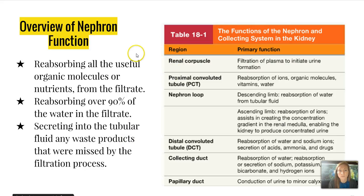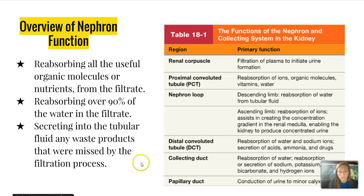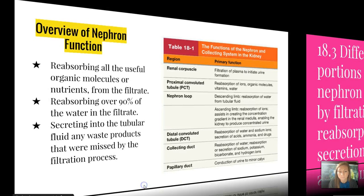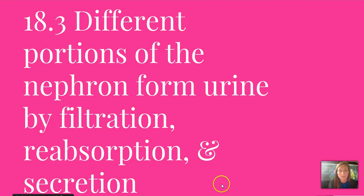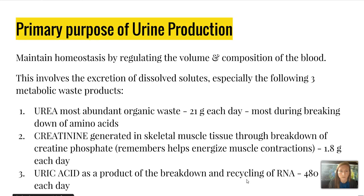Now, an overview of nephron function. Jot down this table and know in what region each function happens. Overall, the nephron reabsorbs all useful organic molecules and nutrients from the filtrate, reabsorbs over 90% of the water in the filtrate, and secretes into the tubular fluid any waste products that were missed by the filtration process. Section 18-3 covers the different portions of the nephron that form urine by filtration, reabsorption, and secretion.